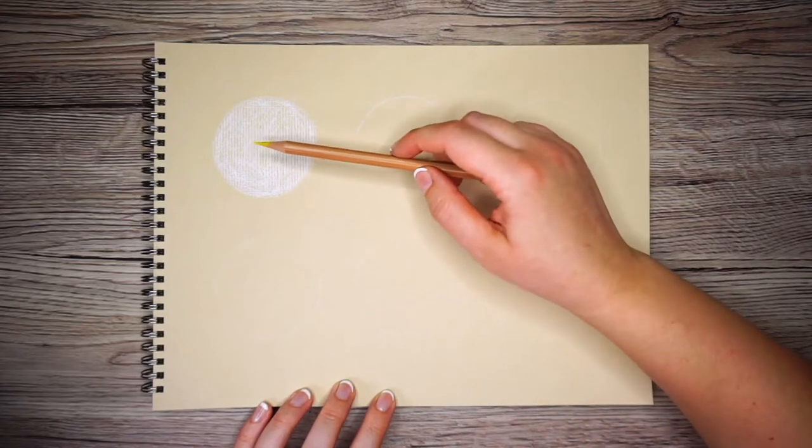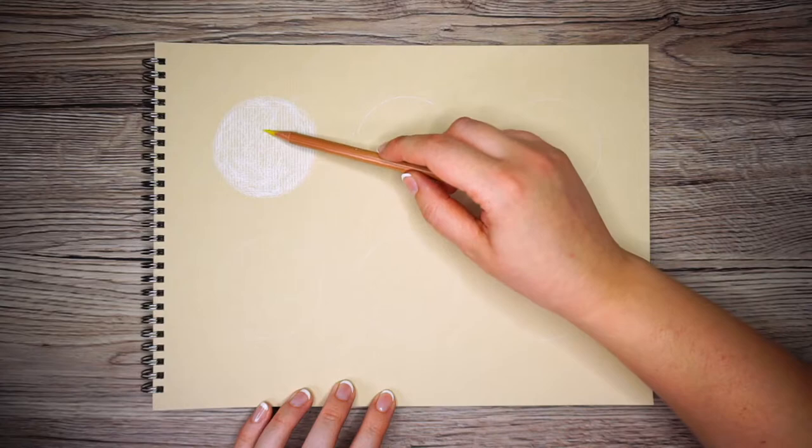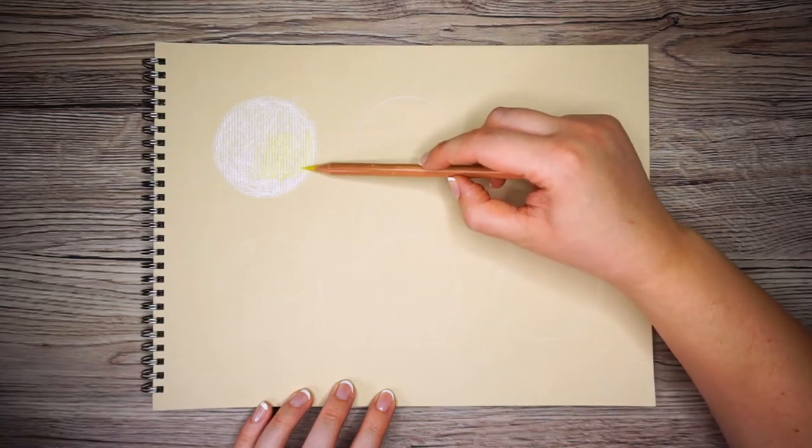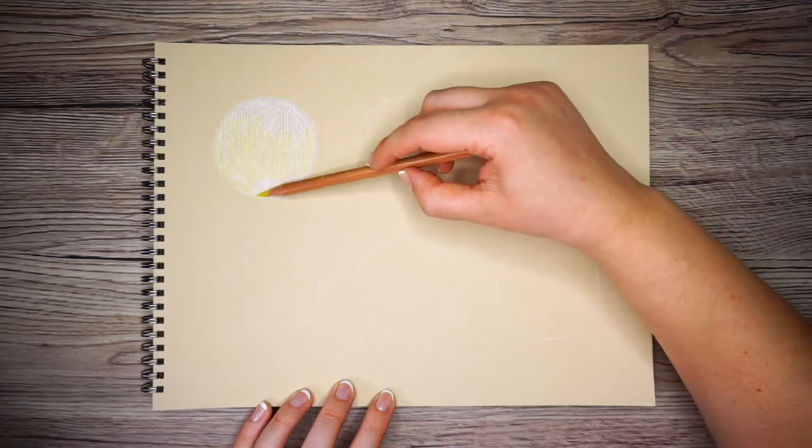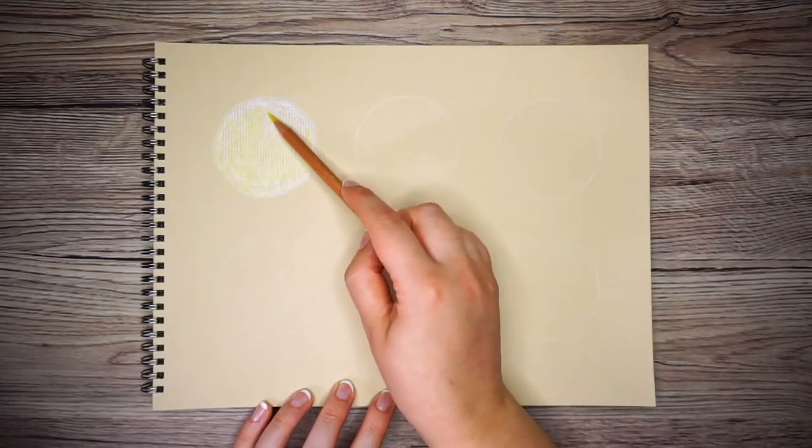So now I'm just going to use my yellow pencil to just lightly shade over that white, using the side of the pencil again and going in circular motions.